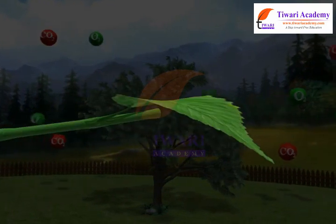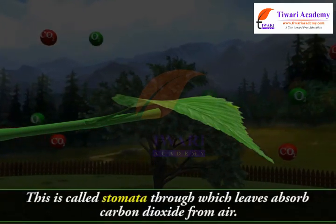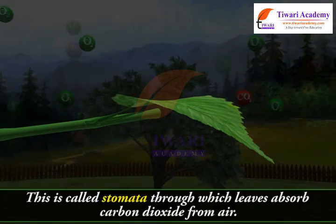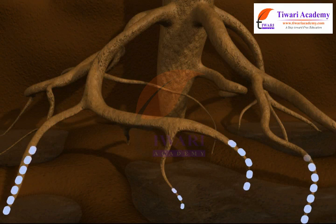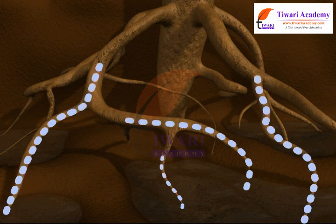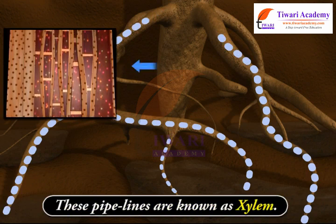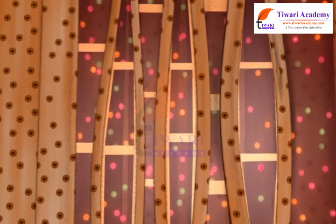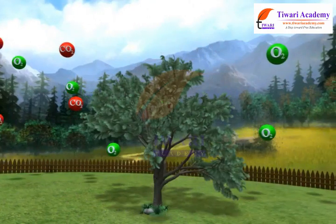Leaves have several tiny pore-like structures on their lower surface called stomata, through which leaves absorb carbon dioxide from the air. Water is transported to the leaves through hair-like pipelines from the roots. These pipelines are present throughout the plant, from roots to branches and leaves, and are known as xylem. Xylem is a type of tissue.